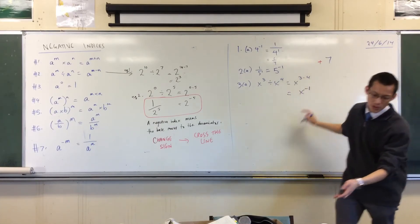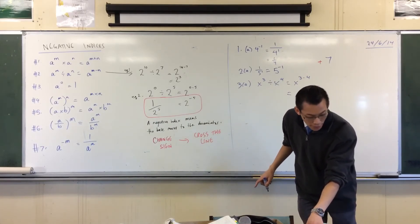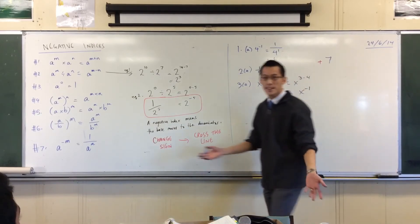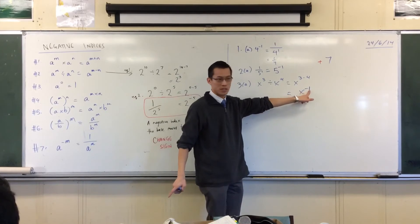I think the question says simplify each of the following using only positive indices. That's another way of saying put it into fractional form, because you see that's not a positive index, is it?